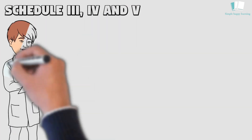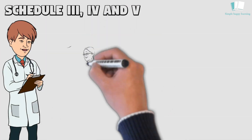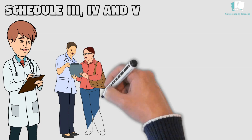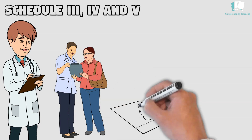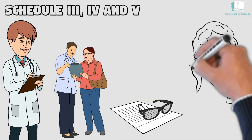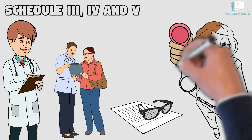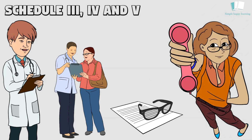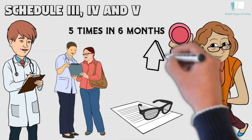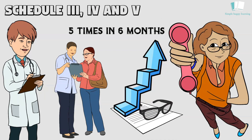Schedule 3, 4, and 5 controlled substances can be prescribed in writing or via verbal communication with a pharmacist. Prescribers can authorize a refill in writing or over the phone; however, the drug can be refilled only up to five times in the six months after the date the prescription was issued. The DEA can change or remove a scheduled substance from a schedule if it receives evidence that a substance is in an inappropriate schedule.